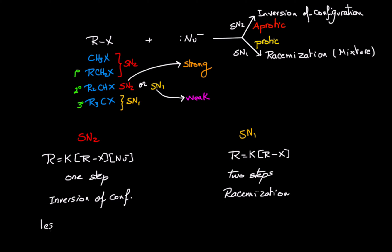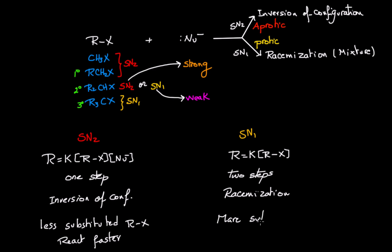Finally, for SN2, less substituted alkyl halides react faster. For SN1, more substituted alkyl halides react faster. This brings us back to the earlier point: third degree alkyl halides undergo only SN1, while methyl halide or first degree alkyl halides undergo only SN2.